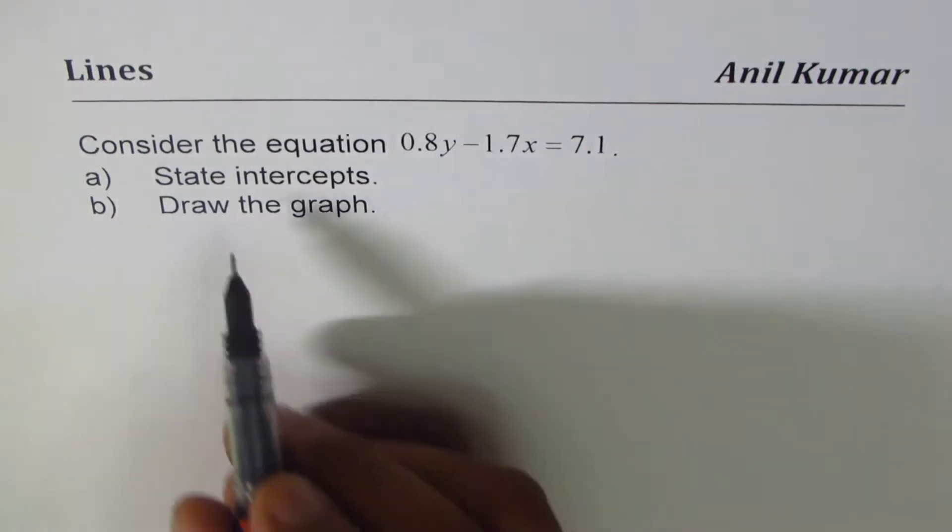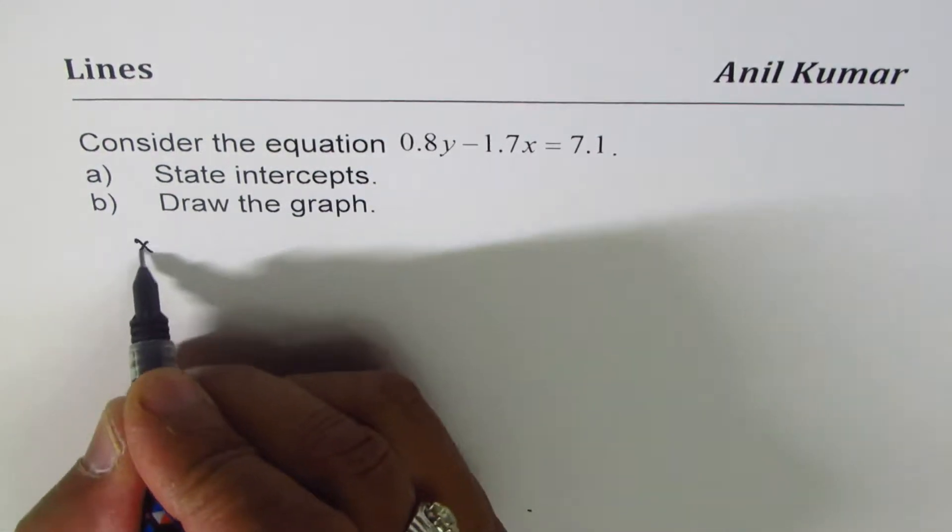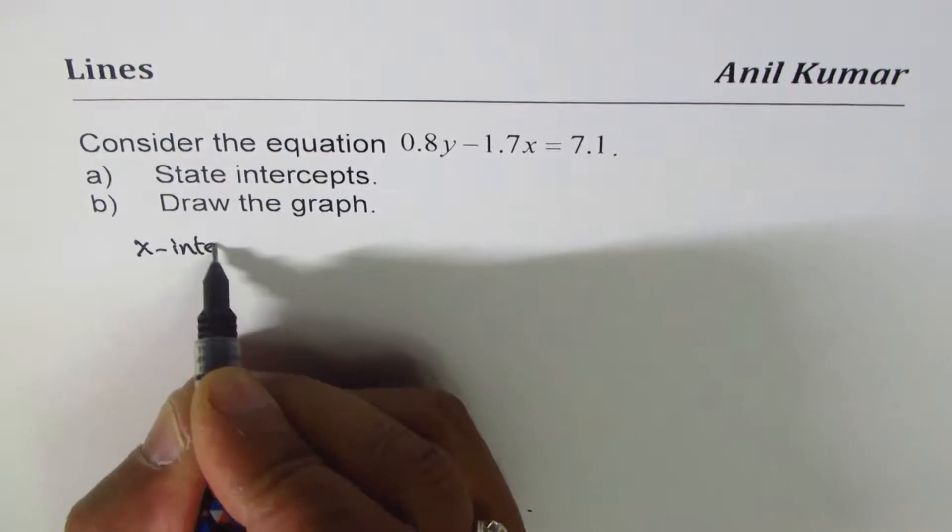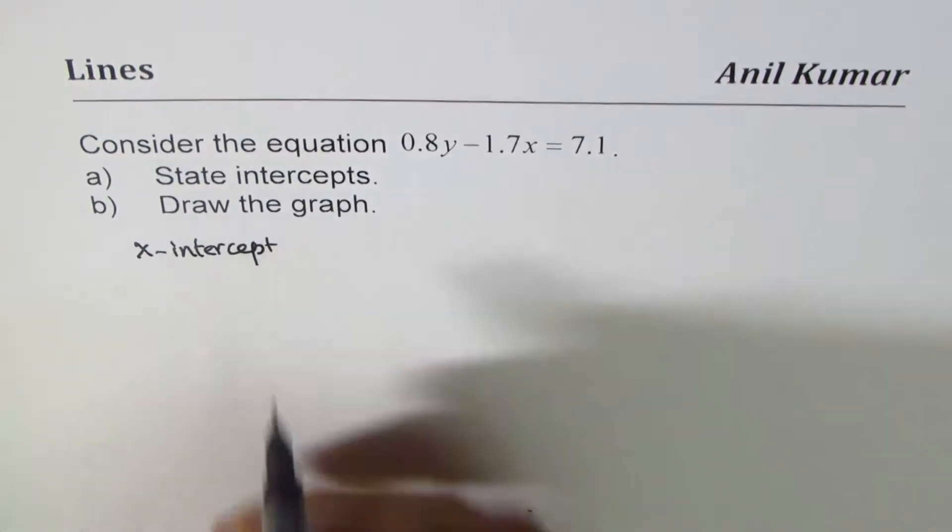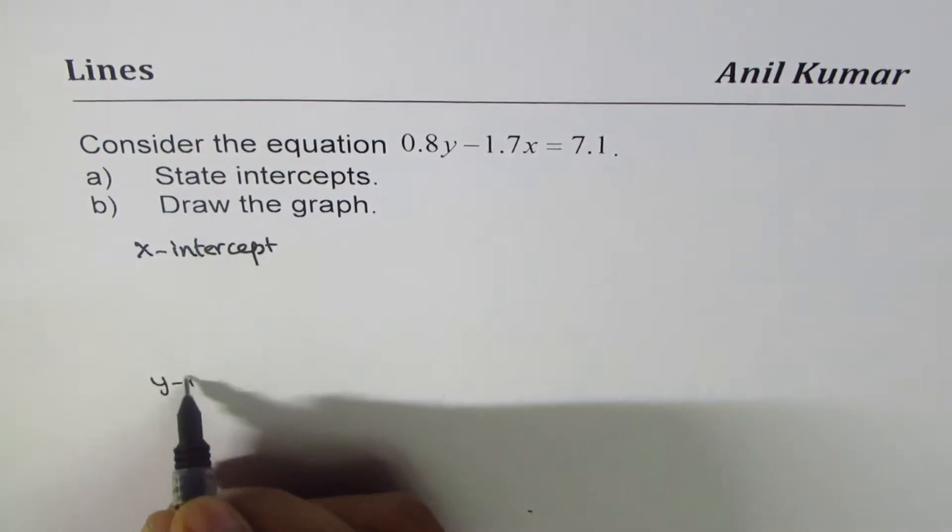First, let's find the intercepts. There are two intercepts for a line: one is the x-intercept and the other one is the y-intercept.